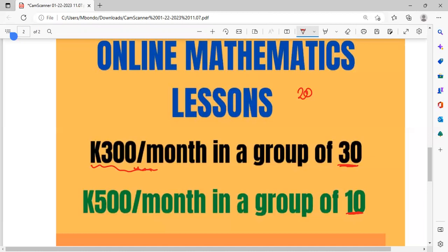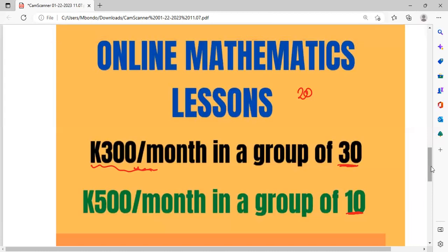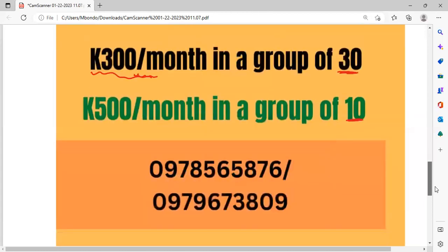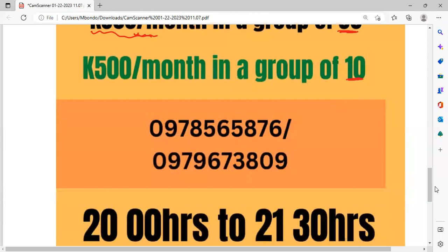Okay, those that may want maybe more attention, they have to be in a group of 10. And in this group of 10 people, you are going to pay 500 kwacha per month, and you will be meeting, we'll agree, it could be four or five contacts in a week. Four or five contacts in a week, intensive, such that you have no reason to fail. So this is the number for Mr. Query, okay, and this is also my number.